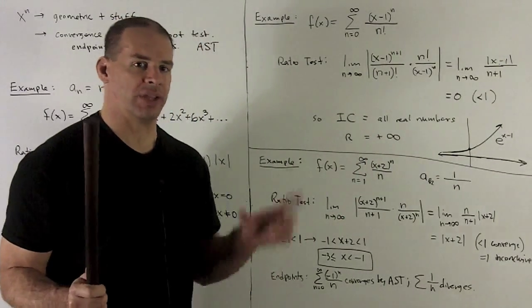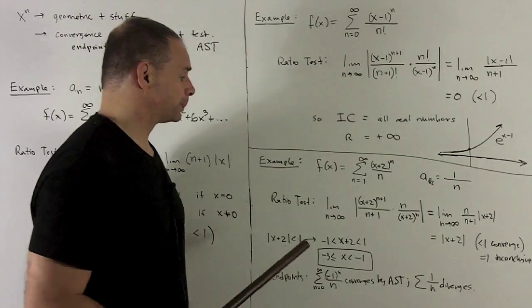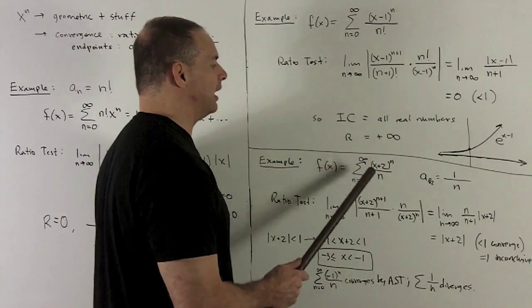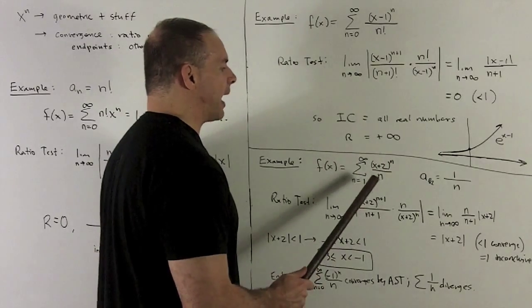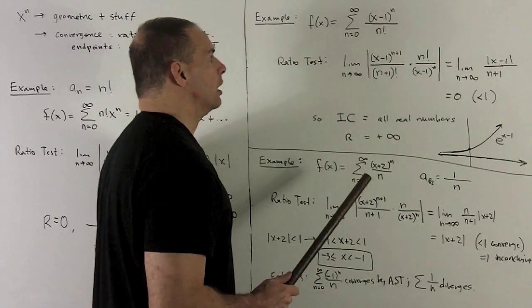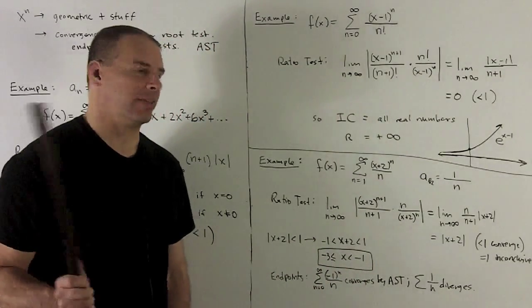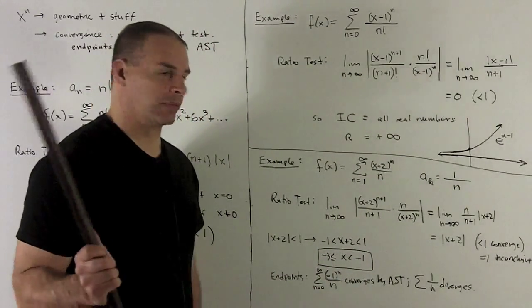Try one last one where we have the small interval. F(x) equal to sum going from one to infinity, (x+2) raised to the nth power over n. So the sequence I'm using here is going to be one over n. And we know bad things happen with that, which is good for this example.